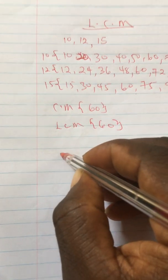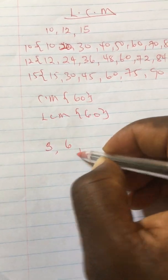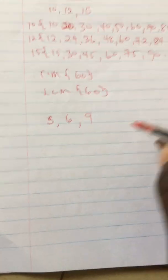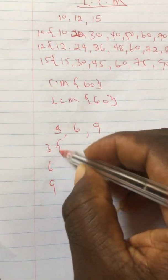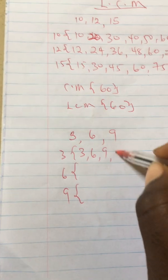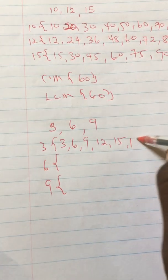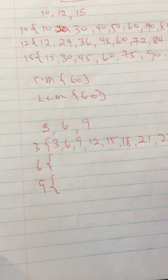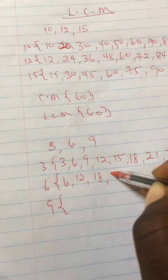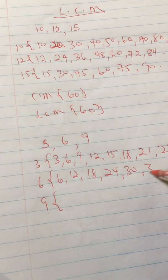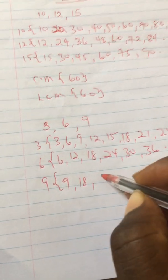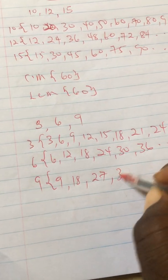Now assuming you have another question: find the LCM of 3, 6, and 9. You find the multiples of 3, 6, and 9. For 3: 3, 6, 9, 12, 15, 18, 21, 24. For 6: 6, 12, 18, 24, 30, 36 — close the bracket. For 9: 9, 18, 27, 36.